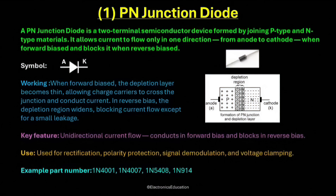The P-type region contains a large number of holes, which are positive charge carriers, while the N-type region contains a large number of electrons, which are negative charge carriers. When these two regions are joined together, a region forms between them known as the depletion layer. This layer acts as a barrier to the movement of charge carriers. The diode has two terminals, called the anode and the cathode. The anode is connected to the P-type material and the cathode is connected to the N-type material.